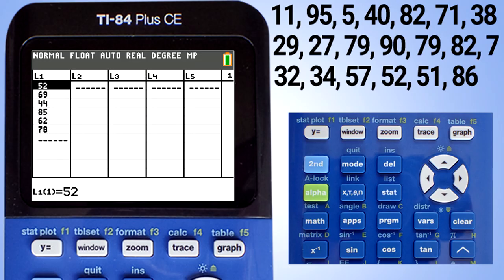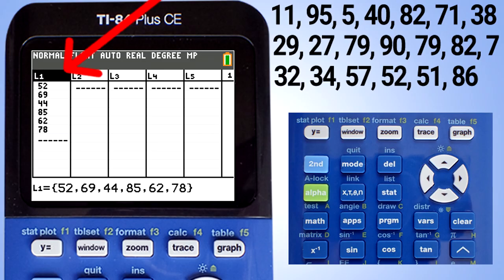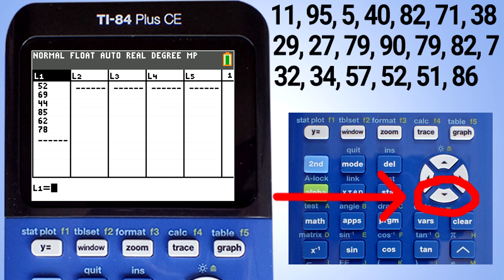This screen pops up. To delete numbers in a list from a previous problem, move the cursor up to highlight L1. Press the clear button, then the down arrow button. The L1 list is now clear.